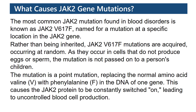The mutation is a point mutation, replacing the normal amino acid valine with phenylalanine in the DNA of one gene. This causes the JAK2 protein to be constantly switched on, leading to uncontrolled blood cell production.